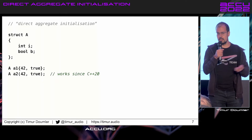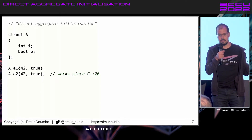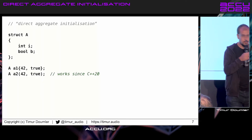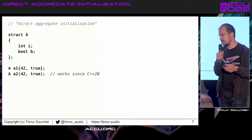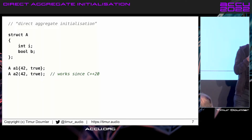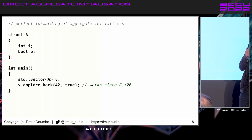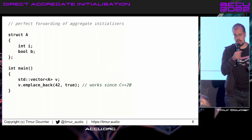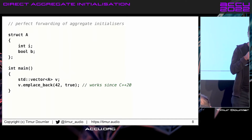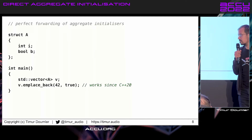Now that doesn't really look very useful right now — you might think the committee is just making things more complicated — but actually no. This is very useful because it allows you to do perfect forwarding on constructor arguments for aggregate types, so that means you can now use things like make_shared or emplace_back with aggregate types, and that's pretty cool.